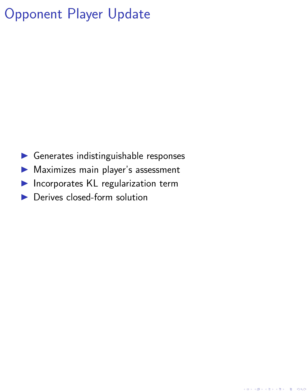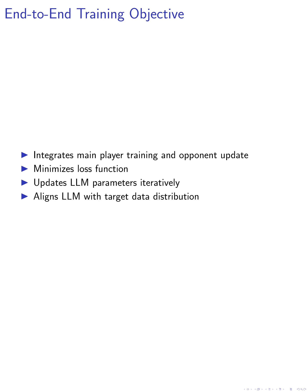We then update the opponent player to generate responses that are indistinguishable from the target data distribution. The expected value of the main player's assessment of responses generated by the opponent player is maximized. We incorporate a Kullback-Leibler (KL) regularization term to control the deviation of the opponent player from the previous iteration's LLM. We derive a closed-form solution for the opponent player's distribution based on the main player's assessment, and integrate the training of the main player and the update of the opponent player into a single end-to-end training objective, defined as the minimization of a loss function comparing responses from the target data distribution and the opponent player's distribution.